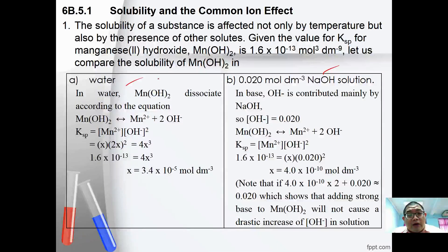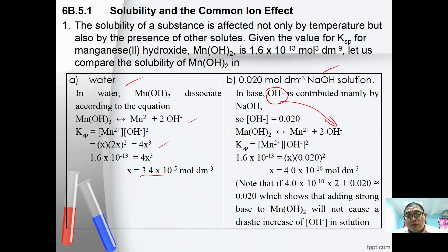After calculations: Mn(OH)₂ → Mn²⁺ + 2OH⁻, KSP = 4x³, giving x = 3.4 × 10⁻⁵ mol dm⁻³ in water. However, if dissolved in 0.02 mol dm⁻³ NaOH, the base contributes mainly to [OH⁻]. Substituting [OH⁻] = 0.020 gives x = 4.0 × 10⁻¹⁰. Note that 2x + 0.02 ≈ 0.02, confirming the approximation is valid.